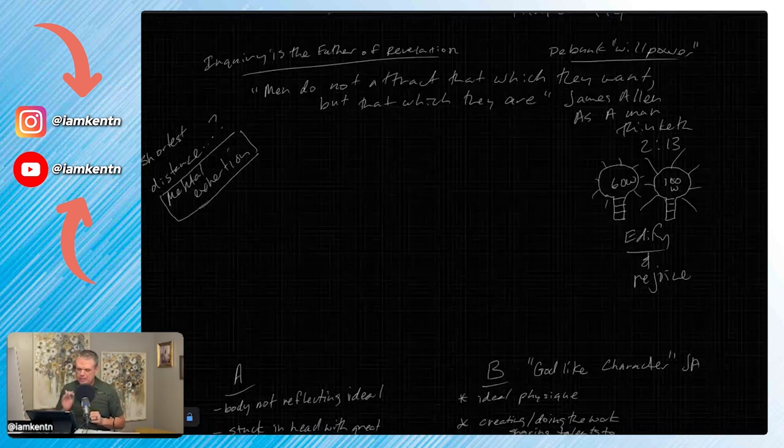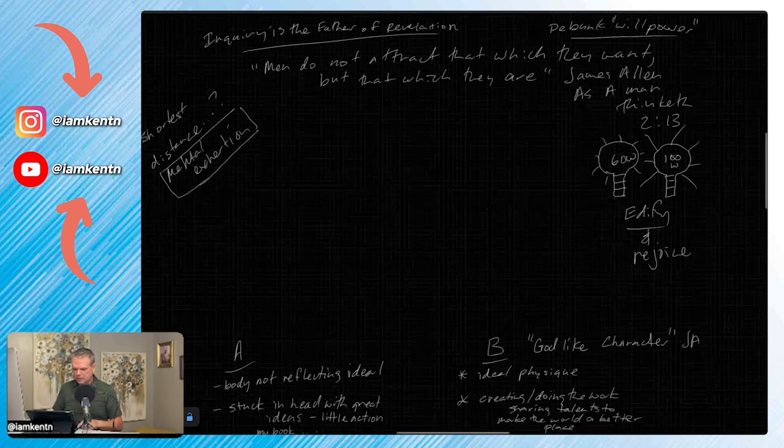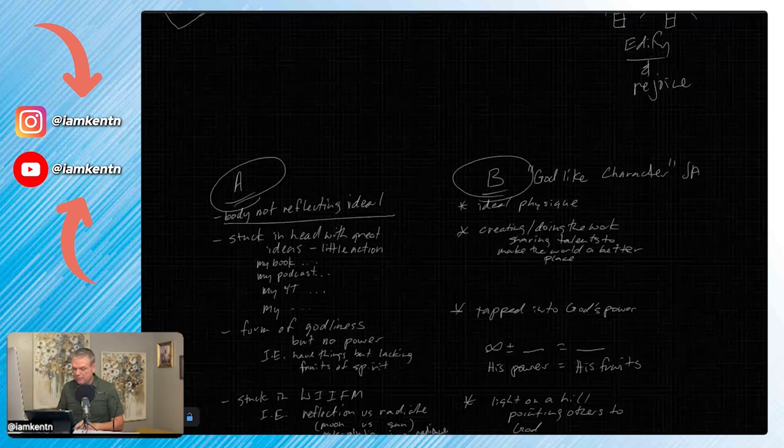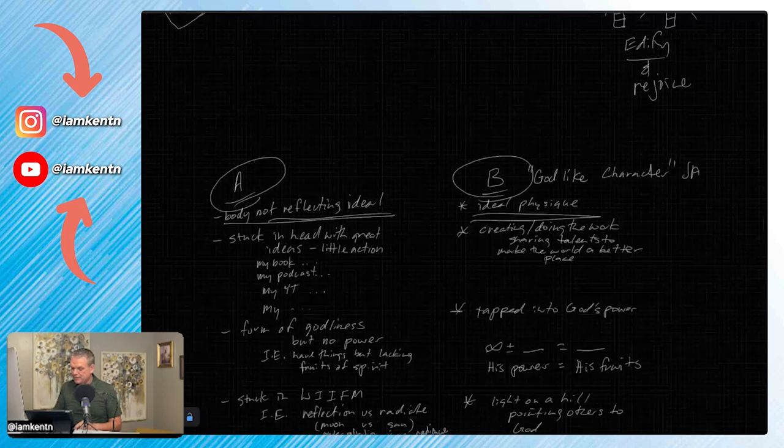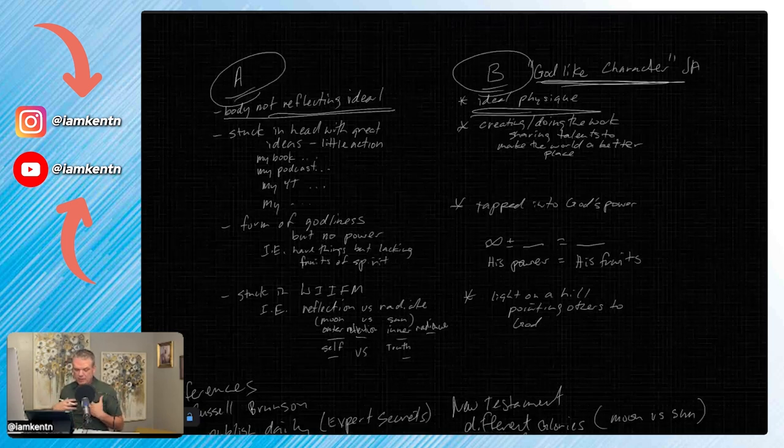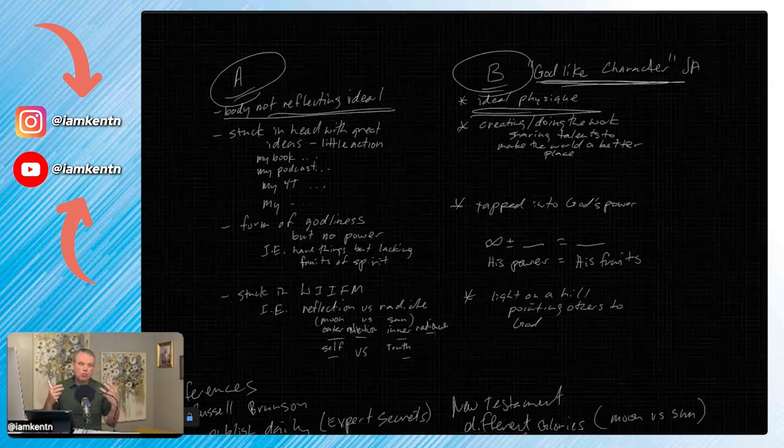James Allen also teaches men do not attract that which they want, but that which they are. So the whole idea behind transitioning from where you are to where you want to be is to become who you want to be to get what you want to get. A is where you are, you have a body that's not reflecting the ideal that you want. But you're stuck in your head with these great ideas but there's little action.